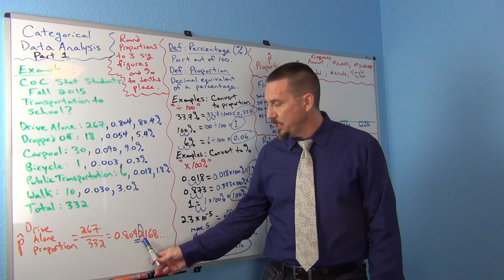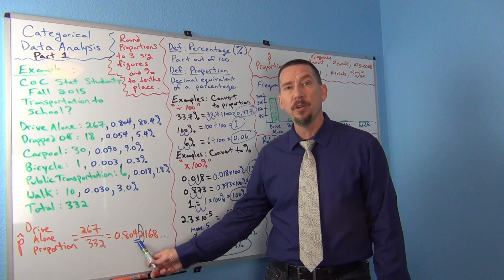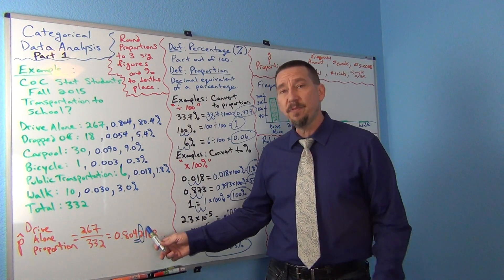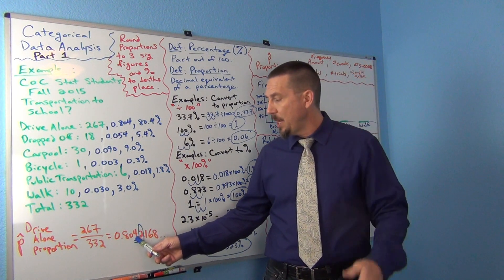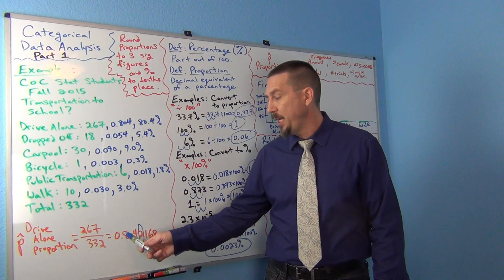But usually what you do is you look to the number to the right of the place value you're trying to measure. So if I look to the number, I'm rounding the four. So I look to the number to the right of it. If that number is five through nine, I round up. That means I'm going to add one to the place value, add one to the four and make it 0.805.